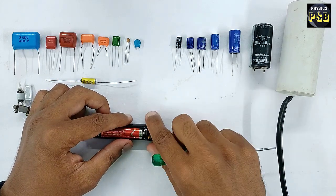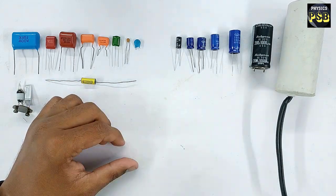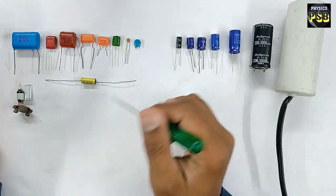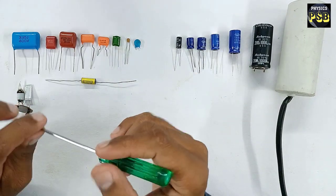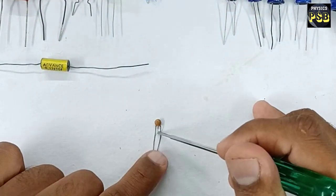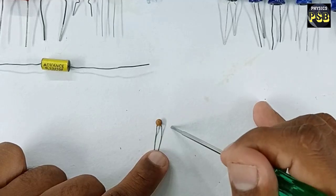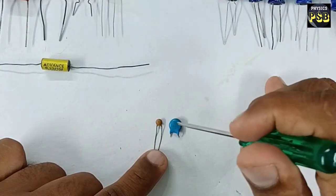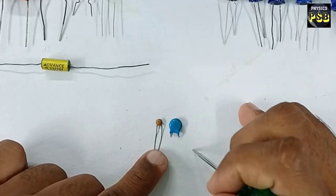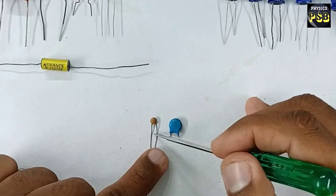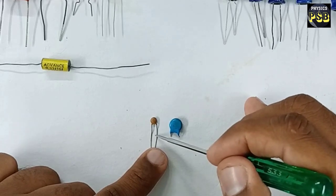Now we'll move to non-polar capacitors. There are different types of non-polar capacitors available. This capacitor is called a ceramic disc capacitor. Here is one more, also a ceramic disc capacitor. Ceramic is used as dielectric material. They have capacitance in picofarad.